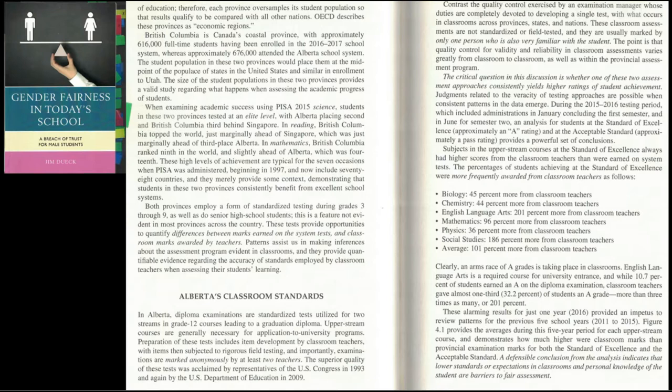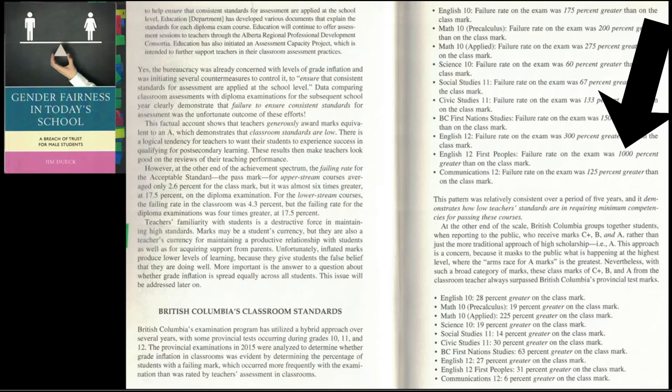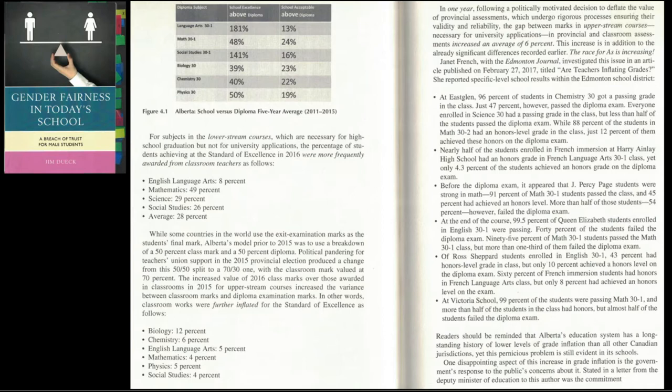British Columbia has the second-lowest grade inflation rates. Nearly four times as many students fail the standardized test for applied math as fail the teacher-graded classroom portion. Once again, grade inflation is highest for English class — eleven times more students fail the provincial test than the teacher-graded portion of the grade 12 English First Peoples class. The exam results have been staying the same; it is the classroom grades that have been rising. The standardized assessments are tethered to international norms — we can't change those and lower expectations the way we can in the classroom.